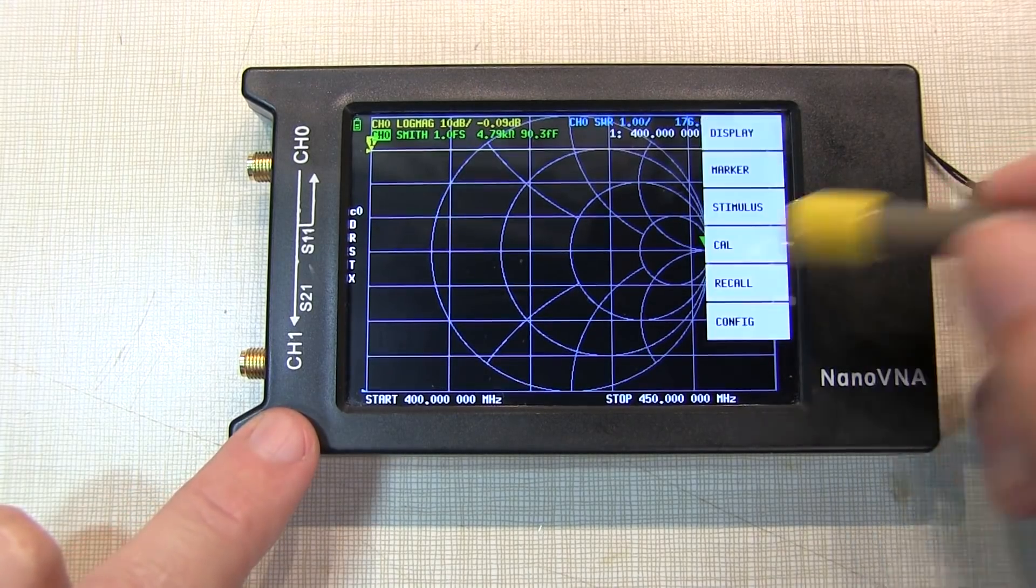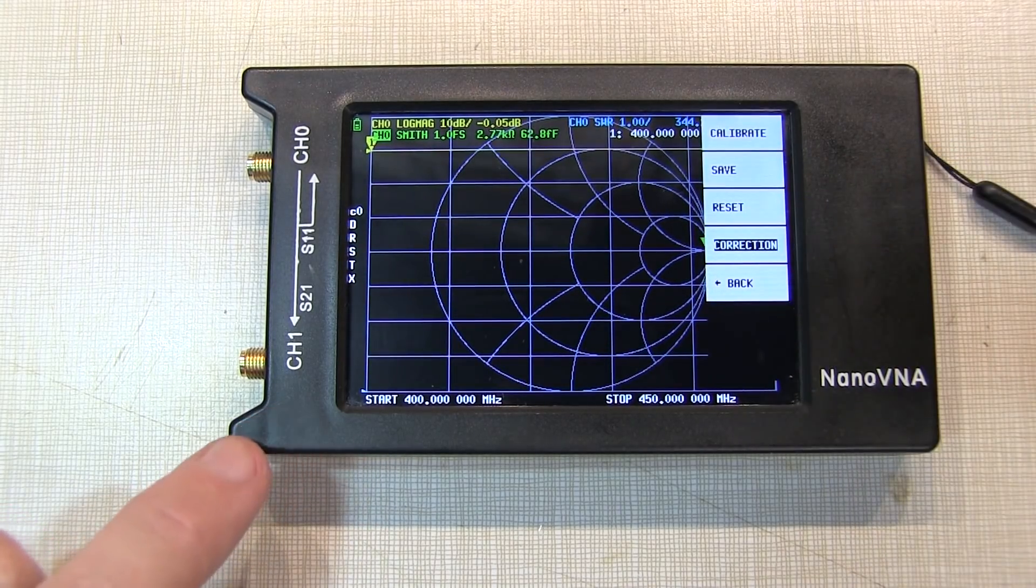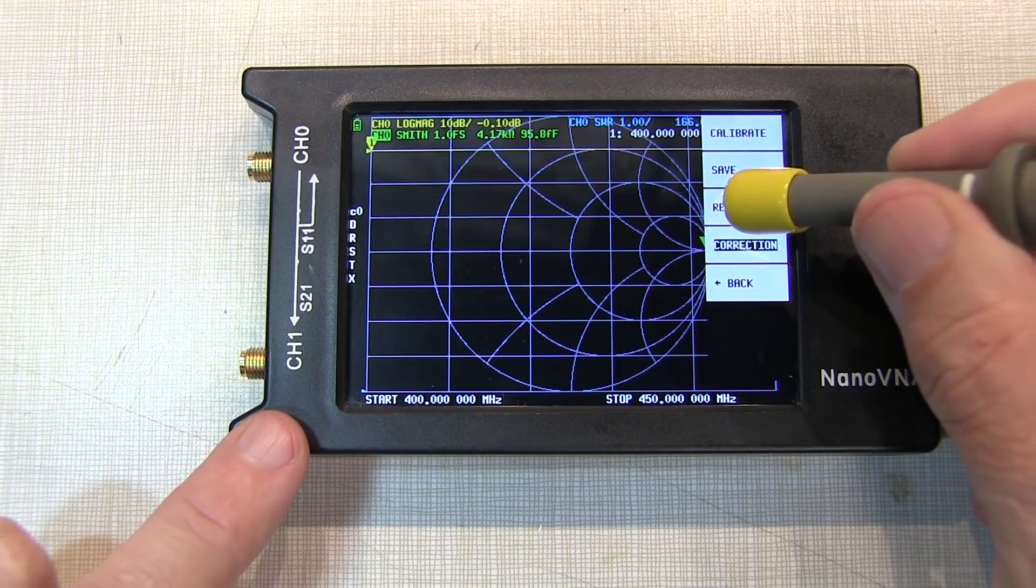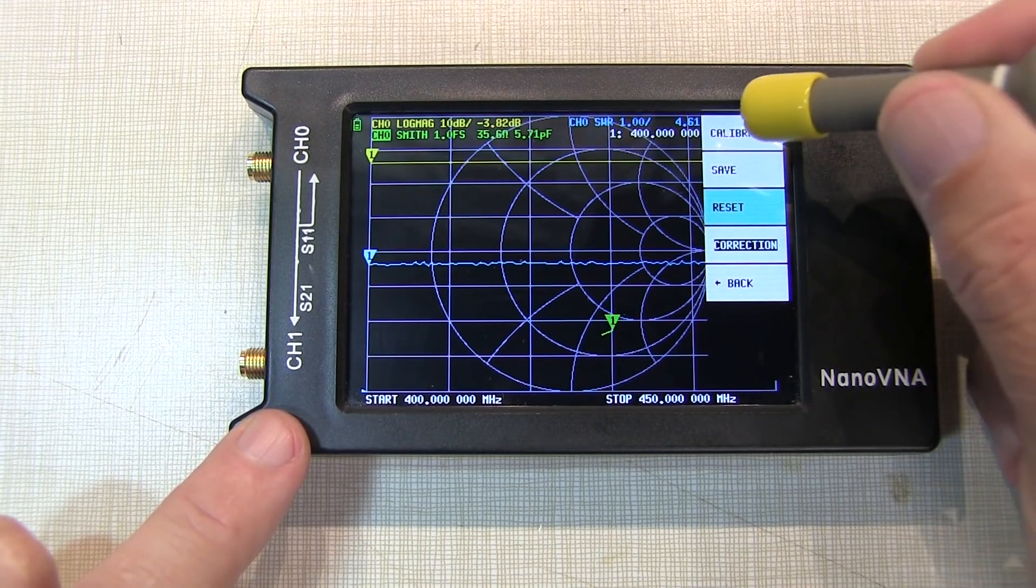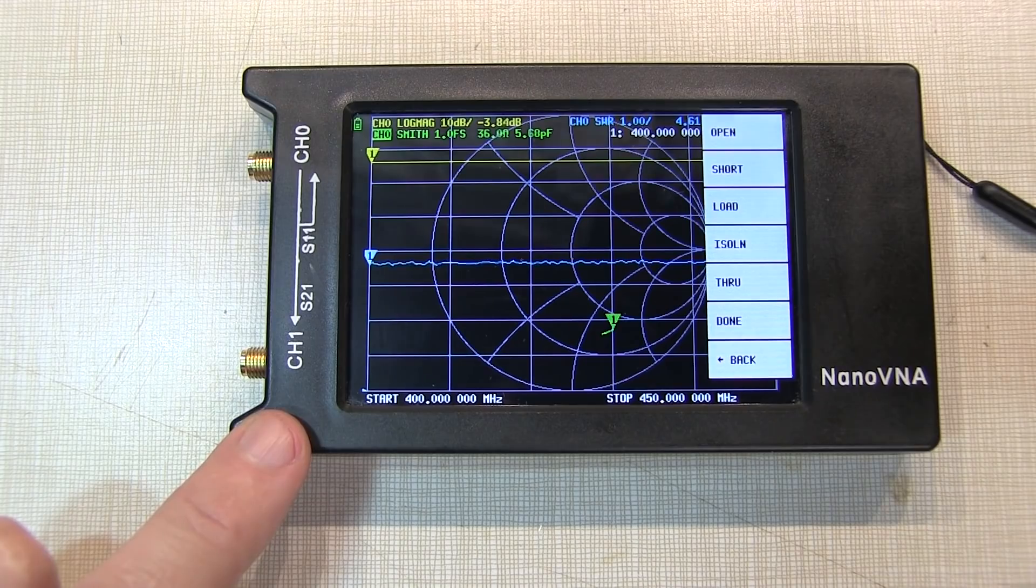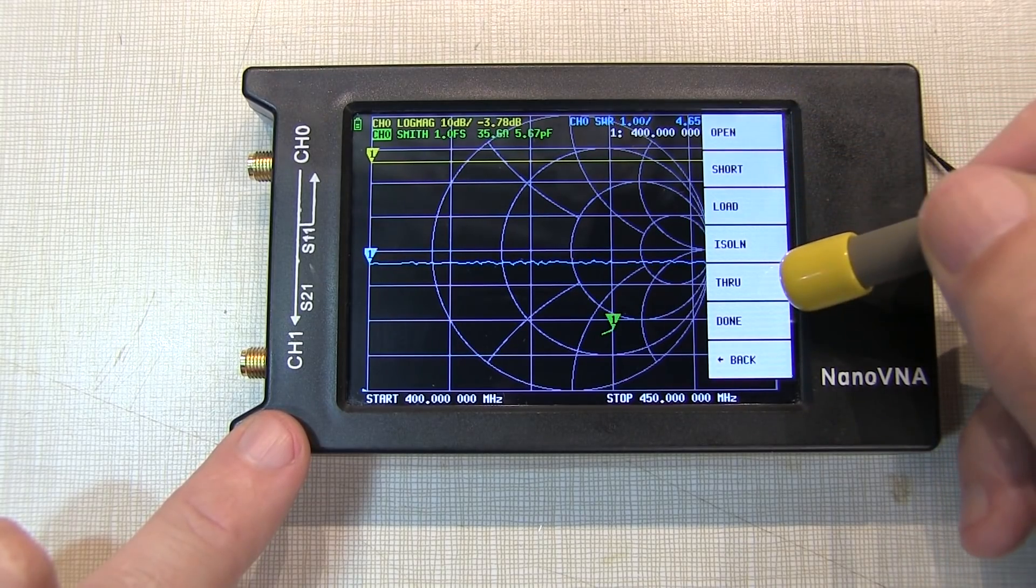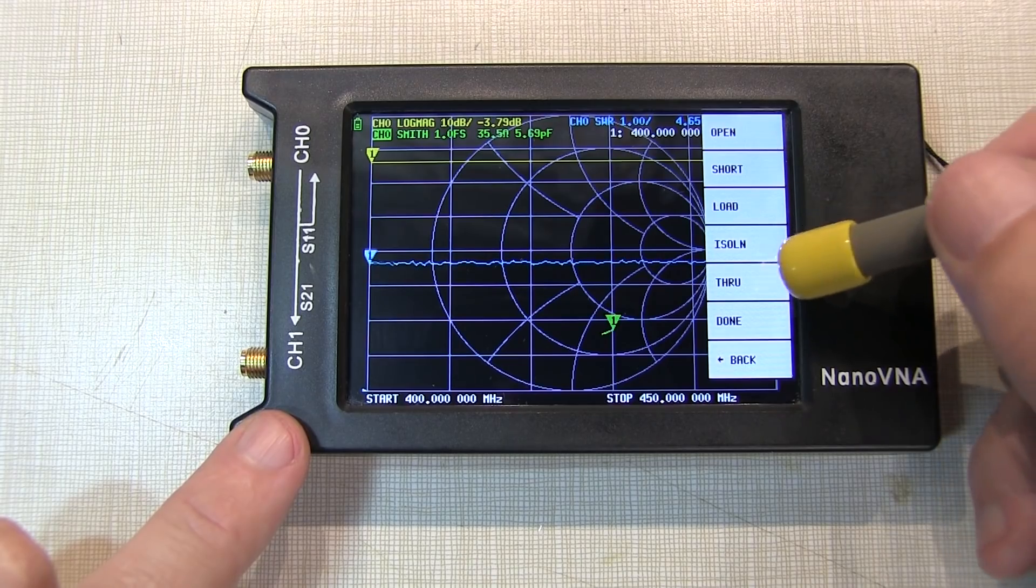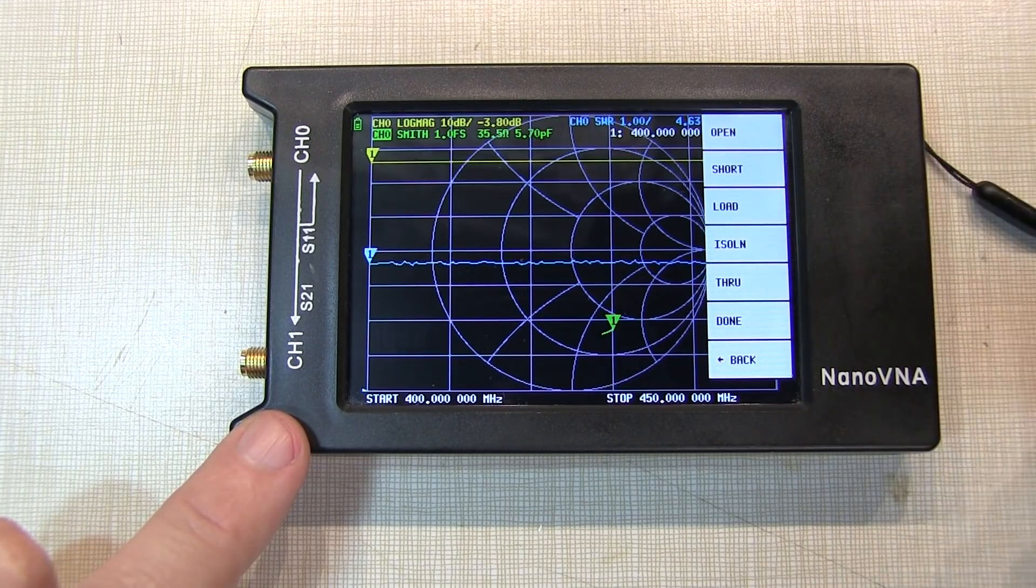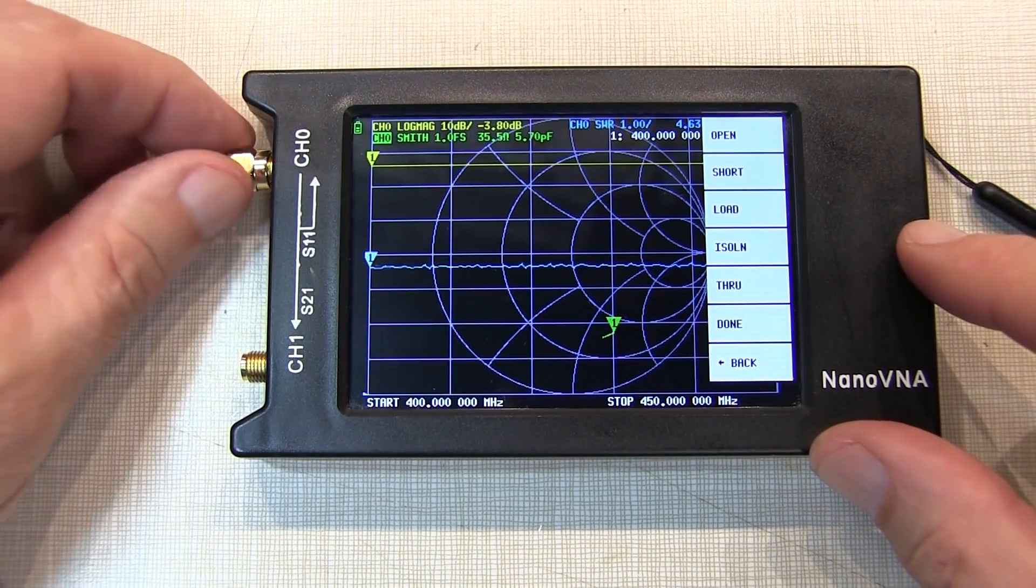So we do that by going into the Cal menu, and we do a reset to clear out the current calibration, and then hit calibrate. And we can see we've got our open, short, load, and then isolation, and through. We're only doing SWR measurements, so we're not going to do these latter two. We're only going to do our open, short, and load.